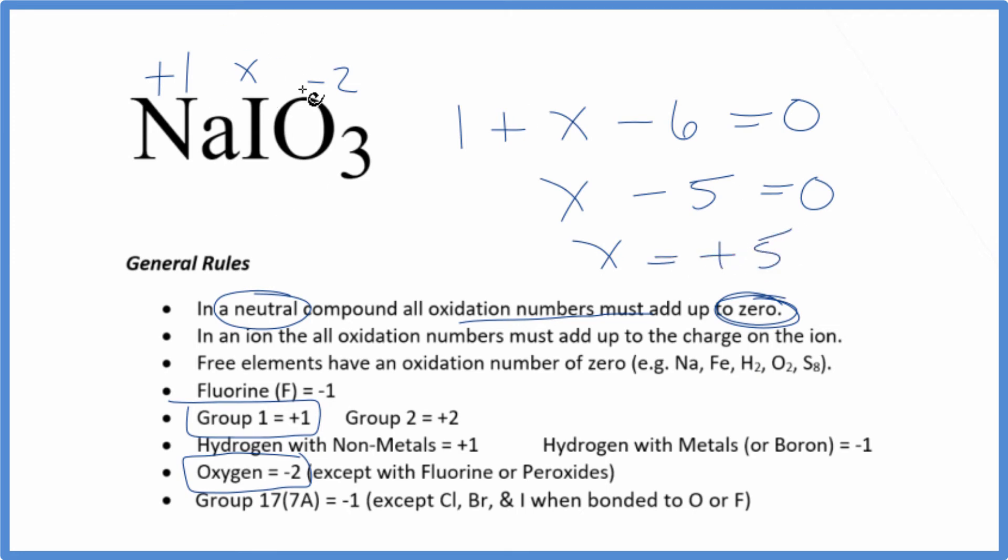So the oxidation number on iodine is +5. All the oxidation numbers on each atom, if we add them up, will equal zero because NaIO3 is a neutral compound.